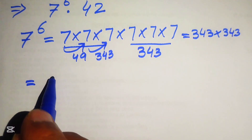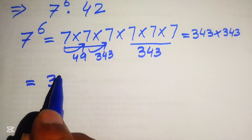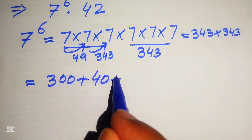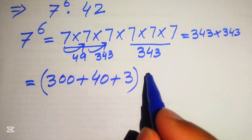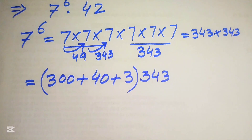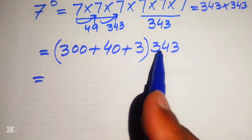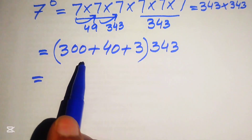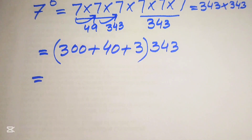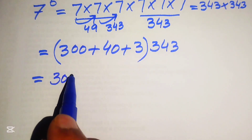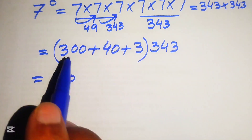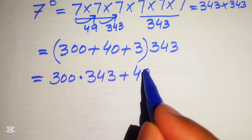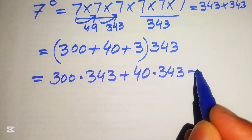In the next step we find the product of 343 times 343. We break 343 as 300 plus 40 plus 3, and multiply each part by 343. Since the calculator is not allowed, we do all the multiplication mentally. This gives us 343 multiplied by 300, plus 343 multiplied by 40, plus 343 multiplied by 3.